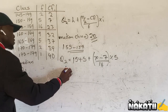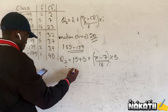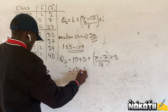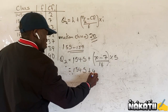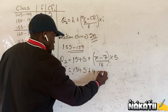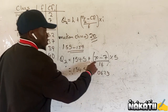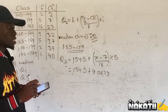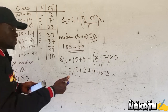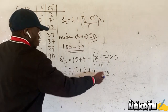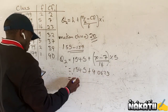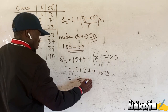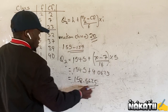Simplifying: this is 154.5 plus, when you work out 20 minus 7, that is 13 divided by 16 multiplied by 5, giving 4.0625. When you add these together, you get 158.5625 as your median.